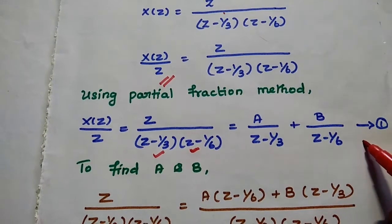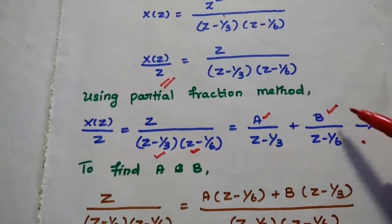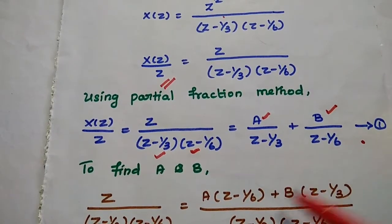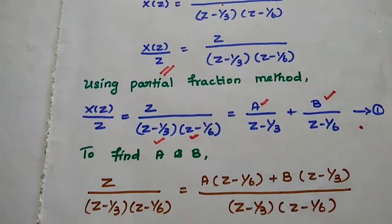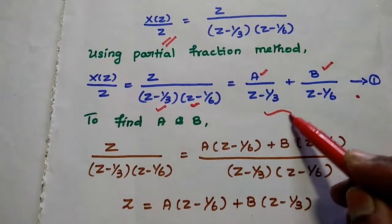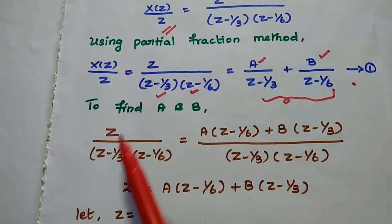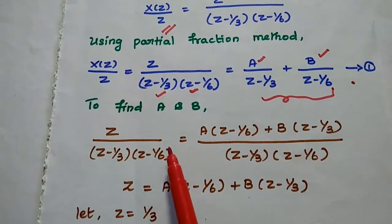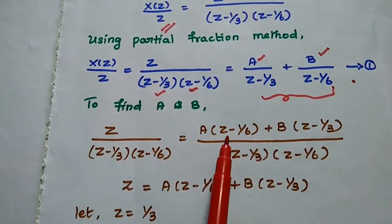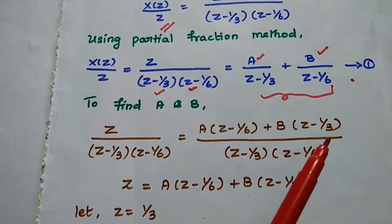Next, we find the values of A and B. Cross-multiplying, we get: 1 = A·(Z - 1/6) + B·(Z - 1/3). We will substitute appropriate Z values to solve for A and B separately.